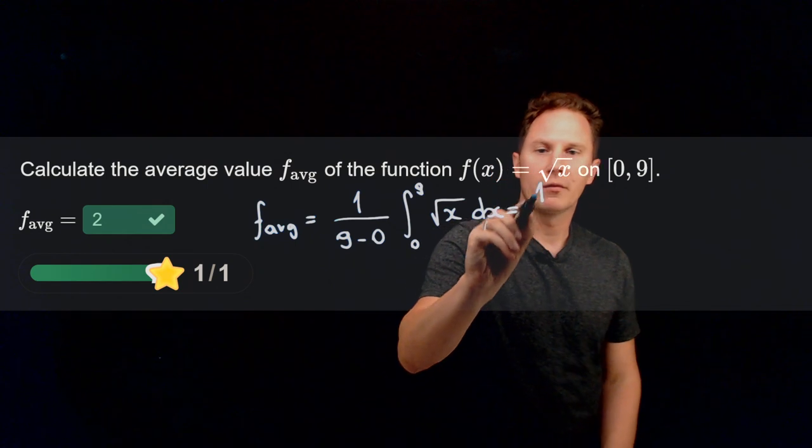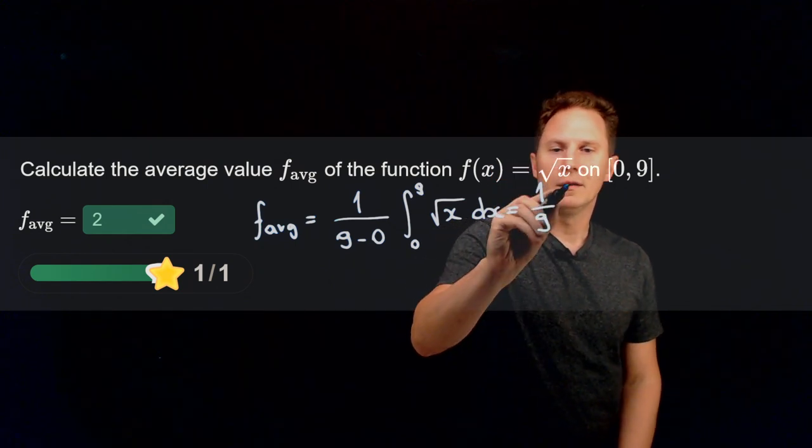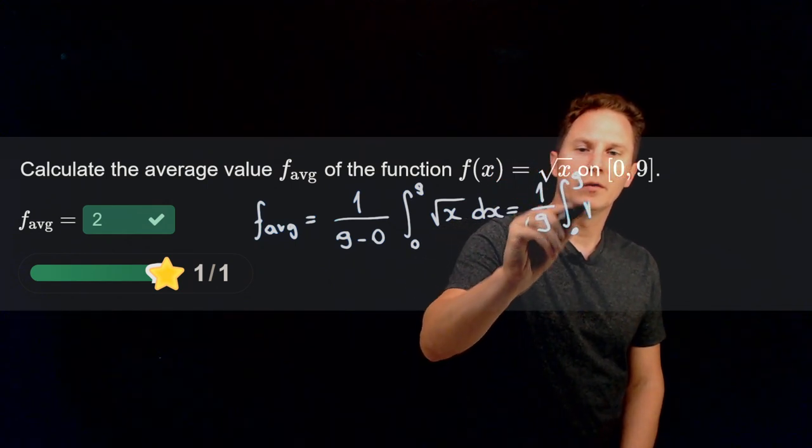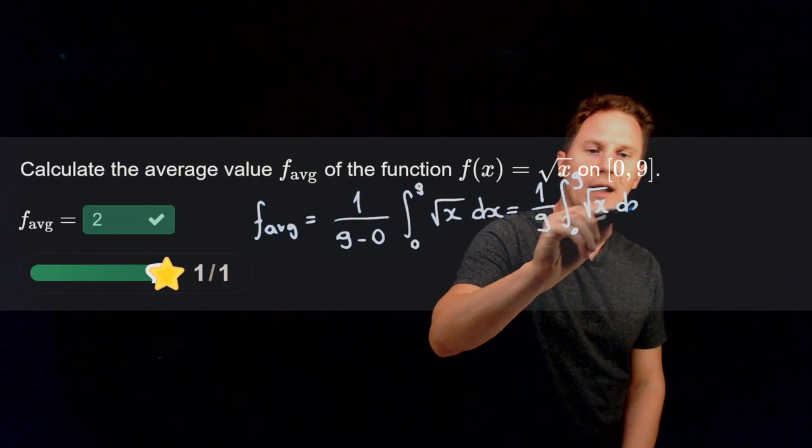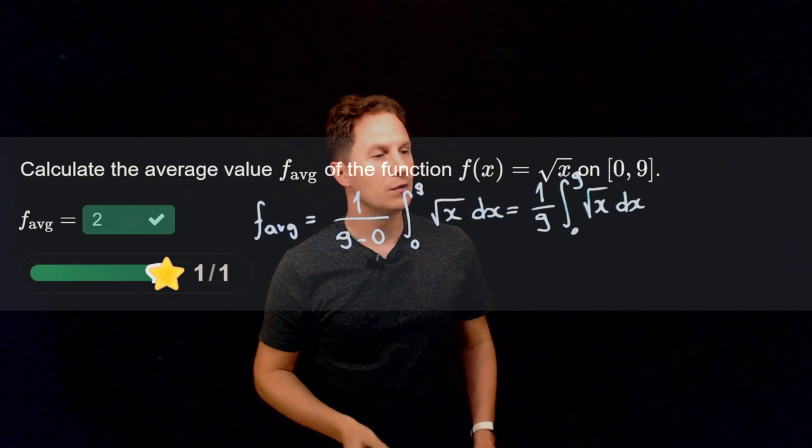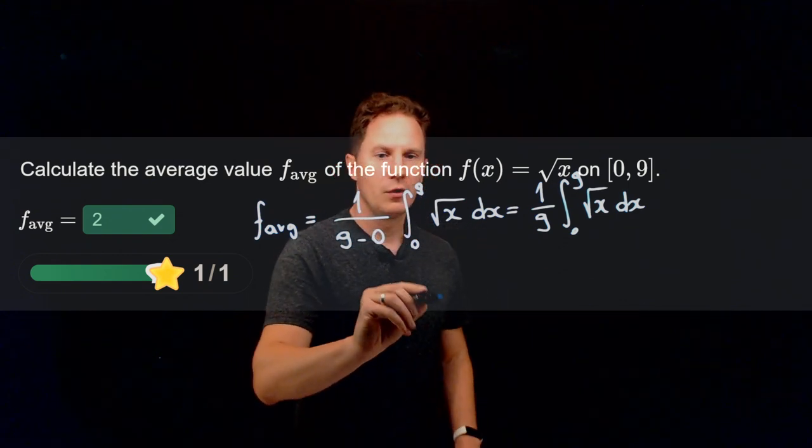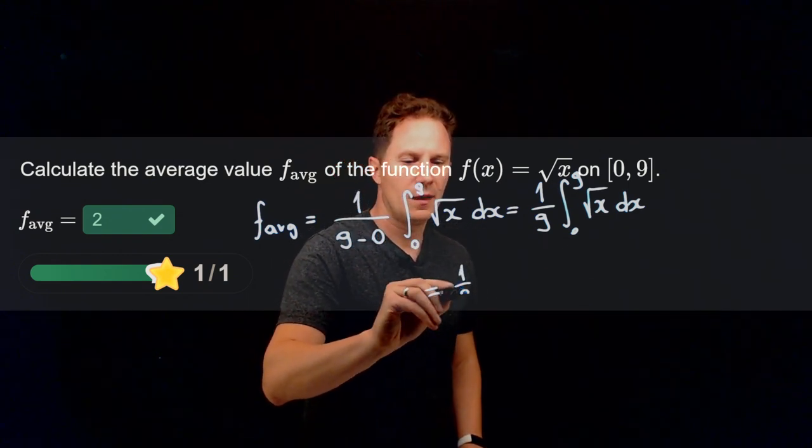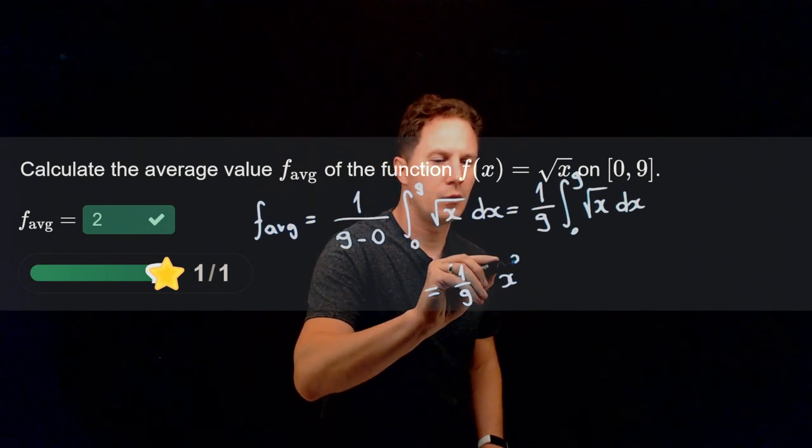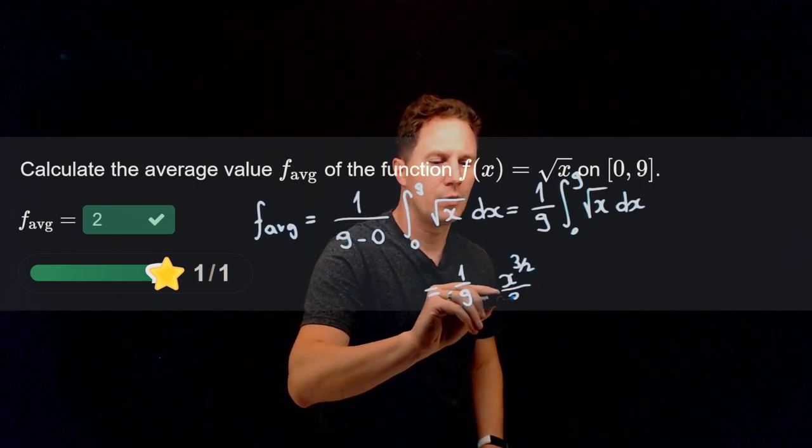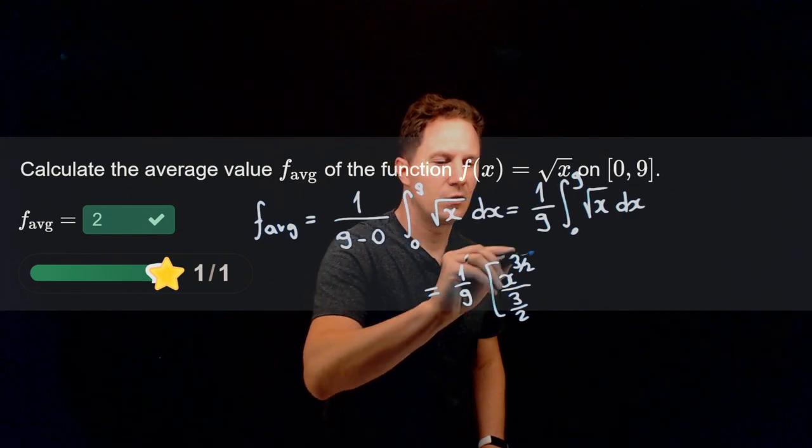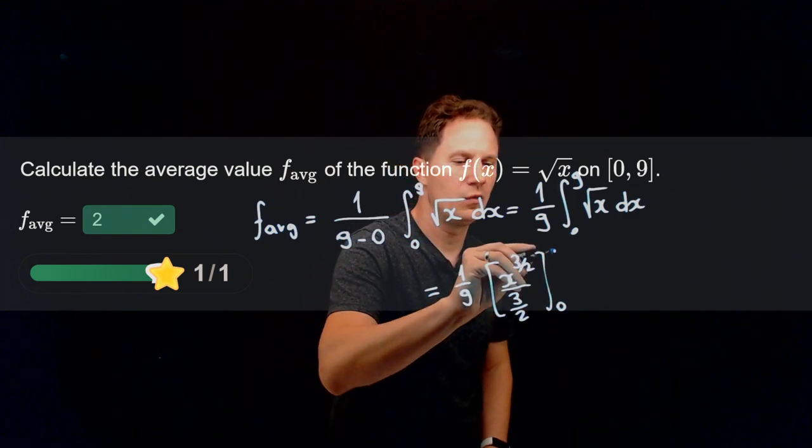Now here we have a ninth times the integral from 0 to 9 of the square root of x dx, or in other words the integral of x to the half. So that has an antiderivative that is x to the 3 halves over 3 halves, its change as x goes from 0 to 9.